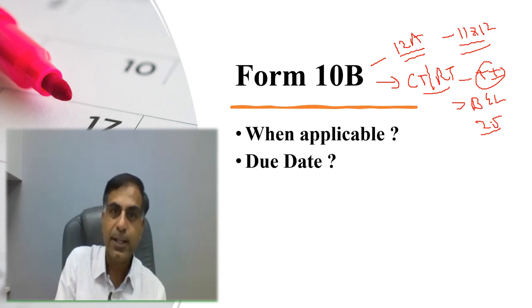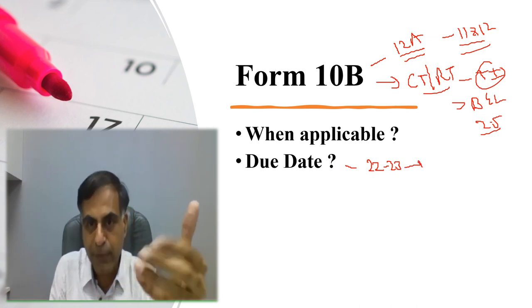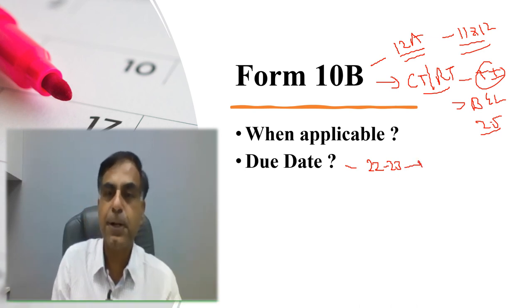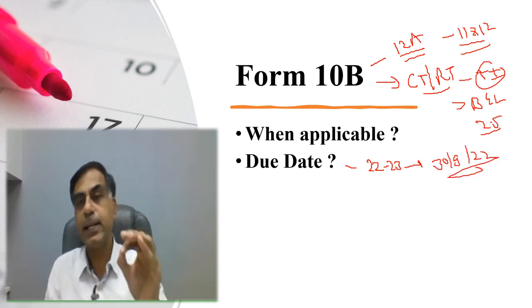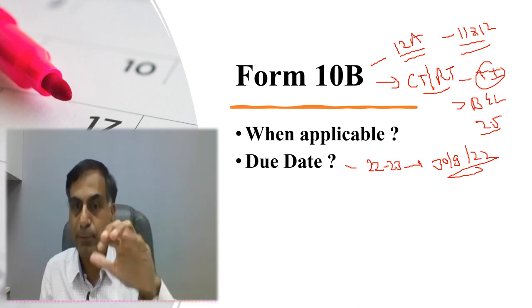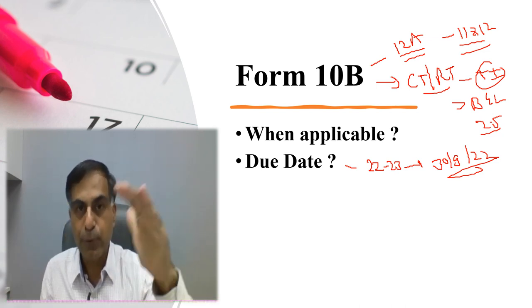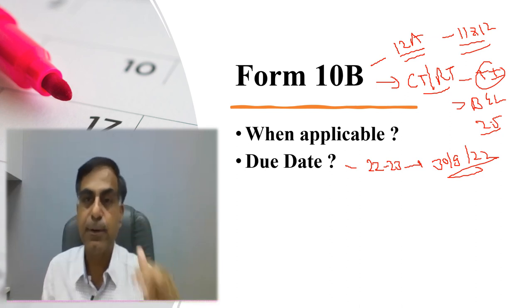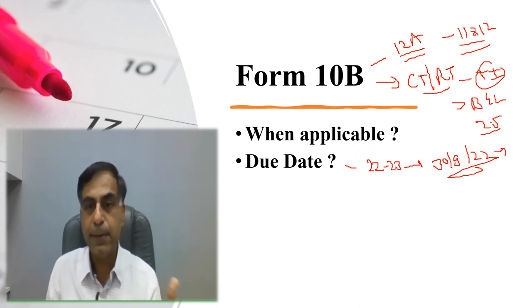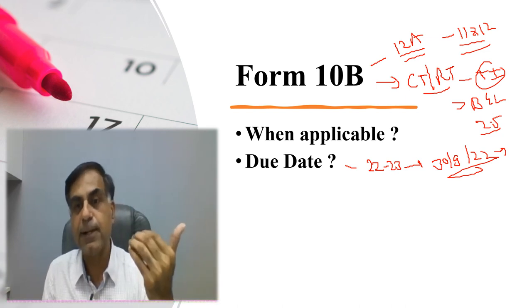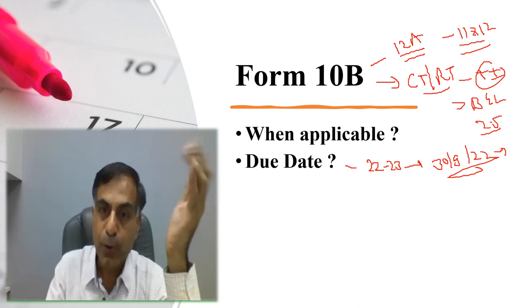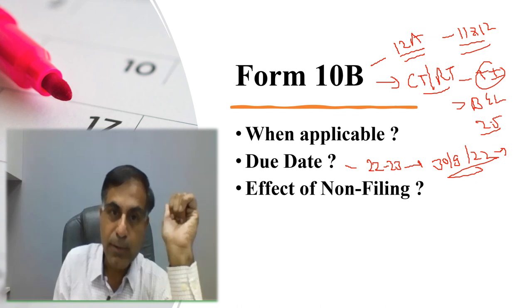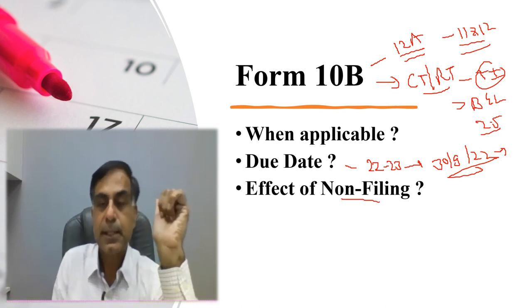Now what is its due date? Say for the assessment year 22-23 for which presently ITRs are being prepared, even form 10B are being prepared. The due date is 30th of September 2022. Yet, the due date of filing ITR for a trust where form 10B is applicable will be 31st of October. But form 10B needed to be filed by 30th of September 2022 by the competent chartered accountant and same has to be accepted by the relevant trust and it has to be then from the trust side accepted on its own income tax login.